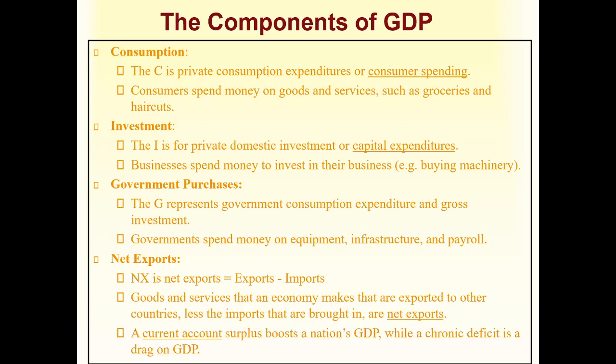So we have four components of GDP: consumption — spending done by consumers; investment — done by businesses; government purchases — all spending done by the government; and finally net exports, which is exports minus imports. These are the four components of GDP.